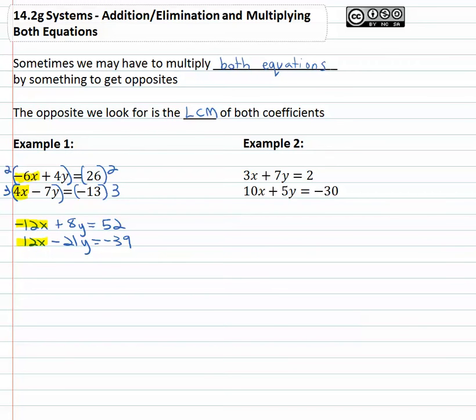And now we got those opposites we were looking for, 12x and -12x. Adding them together, the 12x's are gone and we're left with -13y equals 52 minus 39 is 13.